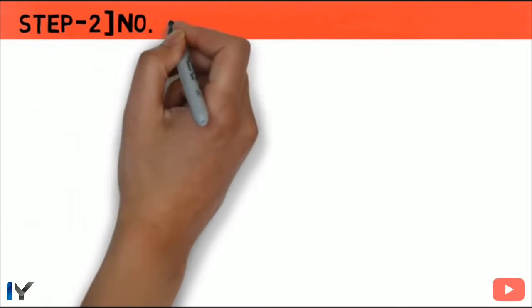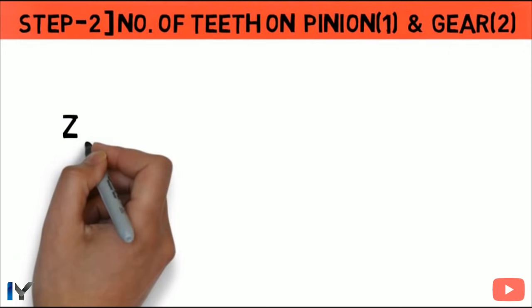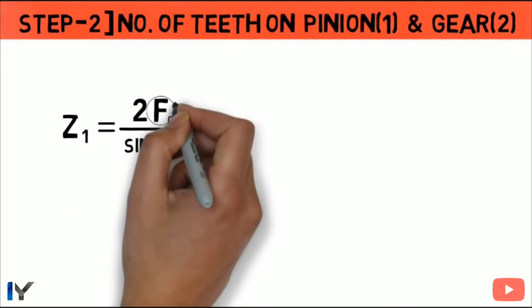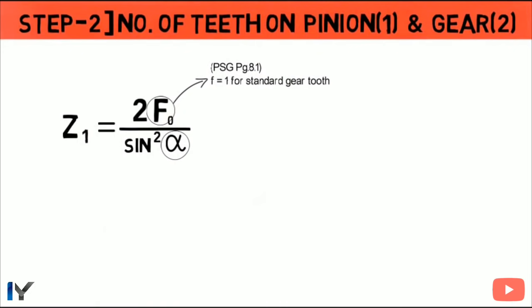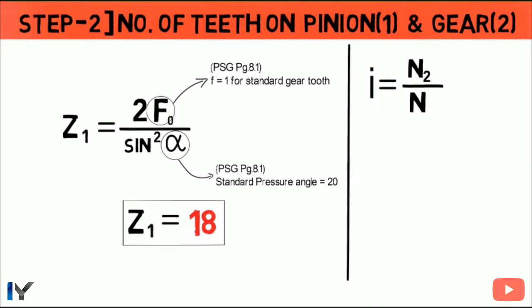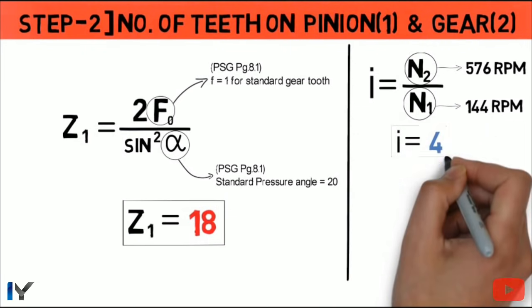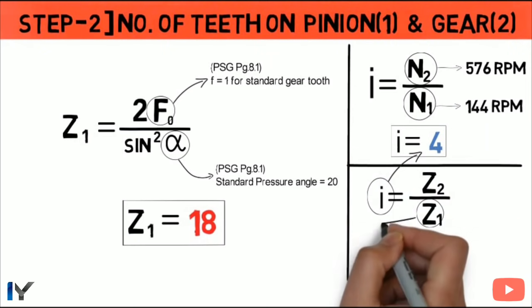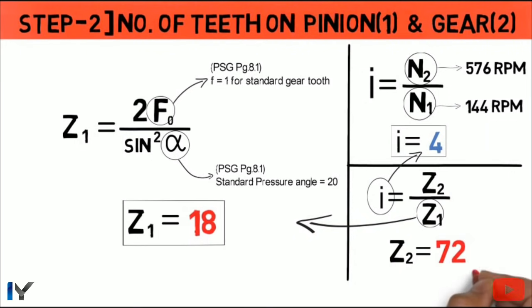Step 2: Find the number of teeth on pinion Z1 and gear Z2. The standard formula to avoid interference is Z1 = 2f₀ / sin²α, where f₀ is the height factor and α is the pressure angle. For full depth gears, f₀ = 1 and α = 20° (from PSG page 8.1). Solving gives Z1 = 18. The gear ratio i = N1/N2 = 576/144 = 4. Since i = Z2/Z1, we get Z2 = 72.